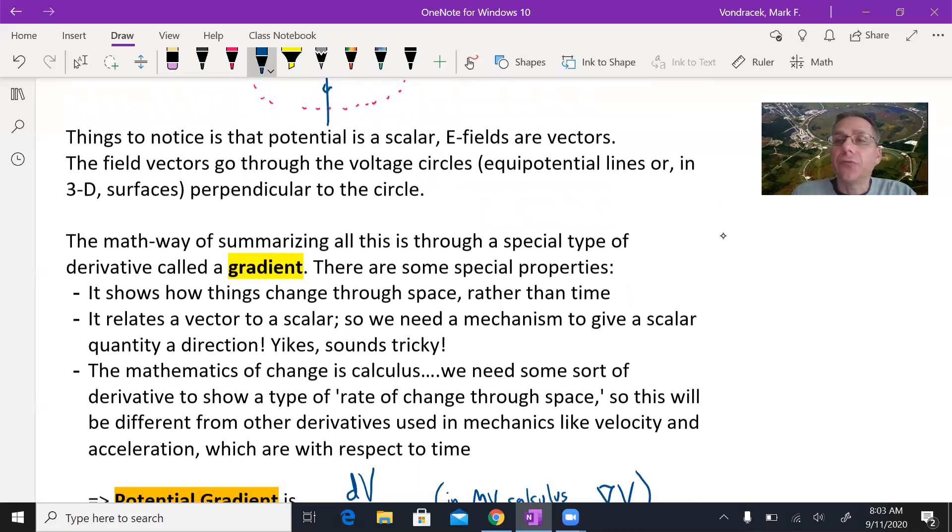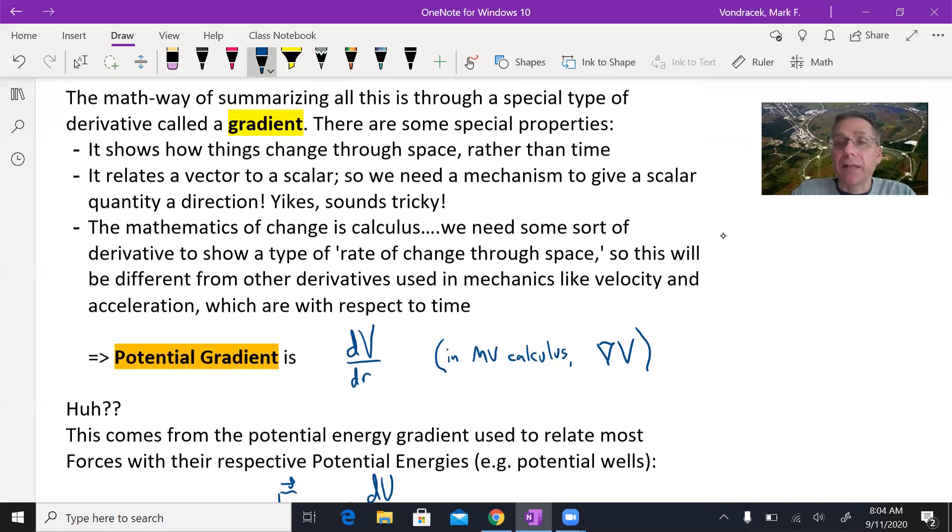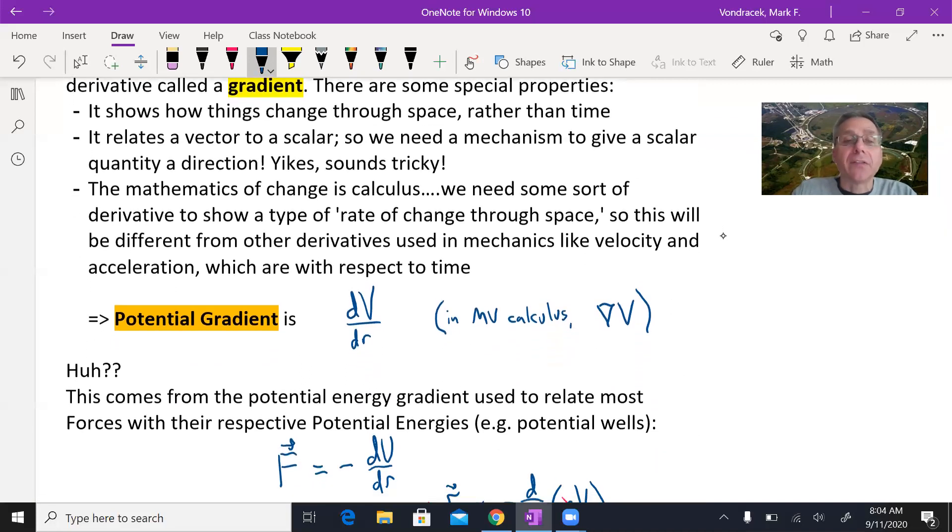It's something that allows you to relate a vector quantity that has direction with a scalar quantity that's just a number. That sounds weird if you're kind of new to this idea, but it's a special kind of derivative that we use. In AP Calculus, gradients is kind of a big deal. For us, the potential gradient is going to be written as dV over dr. How does the voltage change as you move through space around charges? It's a spatial rate, not a time rate. How it varies in space is what a gradient is all about.